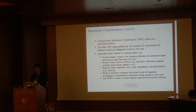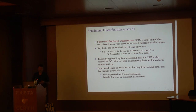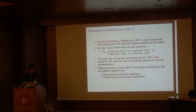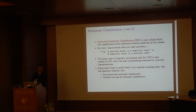This is the basic pattern of unsupervised sentiment classification. Supervised classification works more similarly to what we've seen before — it is a single-label text classification task with sentiment polarity as the classes. Bag of words doesn't lead anywhere given the examples cited earlier. Sentiment classification requires substantial linguistic NLP processing, which is very unlike topic classification. In topic classification, many attempts to bring NLP into the picture have actually failed.